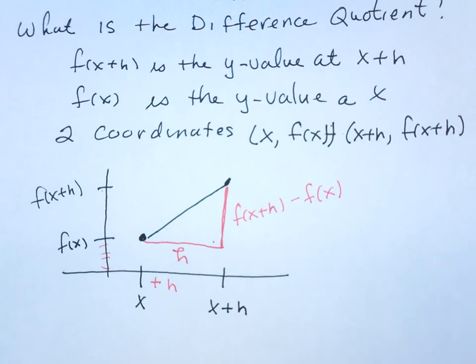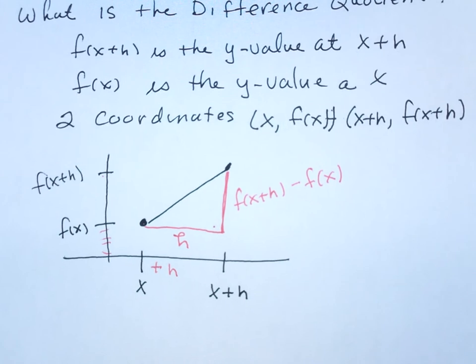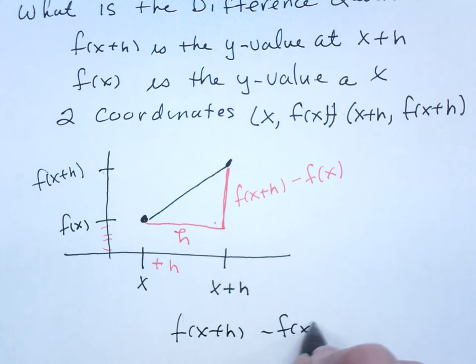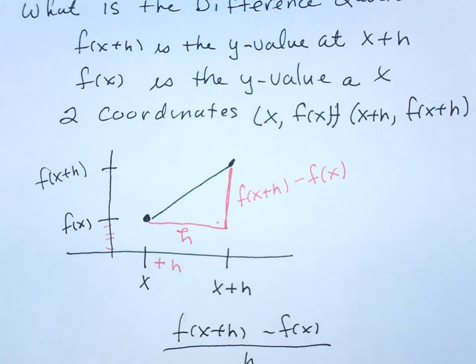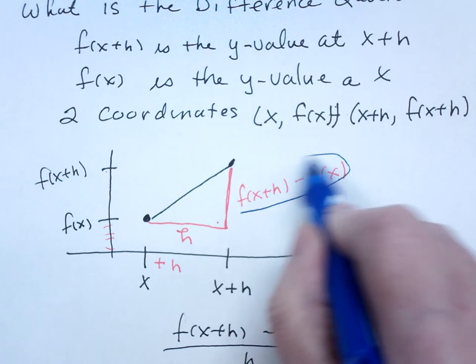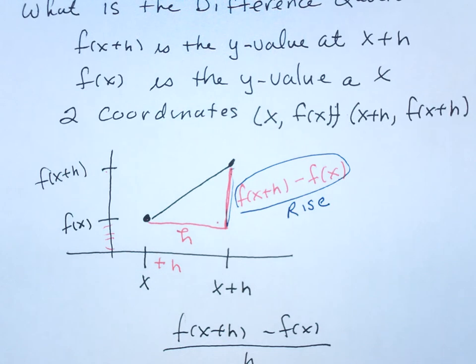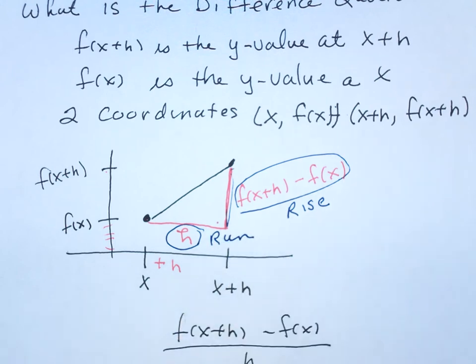So the next question is, what in heck is this stuff? Well, if I look again at the difference quotient. This we kind of recognize is rise. This we kind of recognize is run. So this is really rise over run. What's rise over run? Slope.